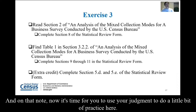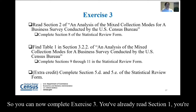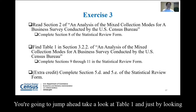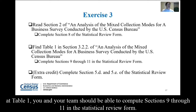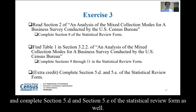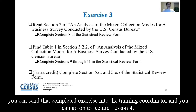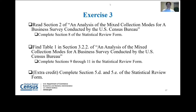On that note, it's time to use your judgment and do a little practice. You can now complete exercise three. You've already read section one — you're going to now read section two and complete section eight of the statistical review form. Then you're going to jump ahead and look at table one, and just by looking at it you and your team should be able to compute sections nine through eleven in the statistical review form. If you're feeling frisky, go ahead and complete sections 5D and 5E as well. When you're done, send the completed exercise to the training coordinator and go on to lesson four. Happy reviewing!